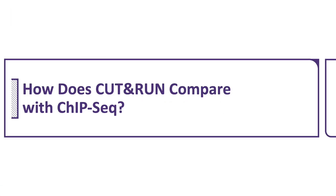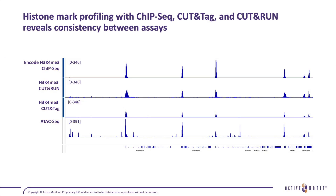How does CUT&RUN compare with ChIP-seq? Looking at tracks from ChIP-seq, CUT&RUN, and CUT&TAG for H3K4 trimethyl — a mark associated with open chromatin — with ATAC-seq as a reference on the bottom, all three assays show strong peaks in the same regions, demonstrating high concordance. CUT&RUN captures most ChIP-seq and CUT&TAG peaks, with the majority of peaks captured by all three assays and some peaks unique to each.